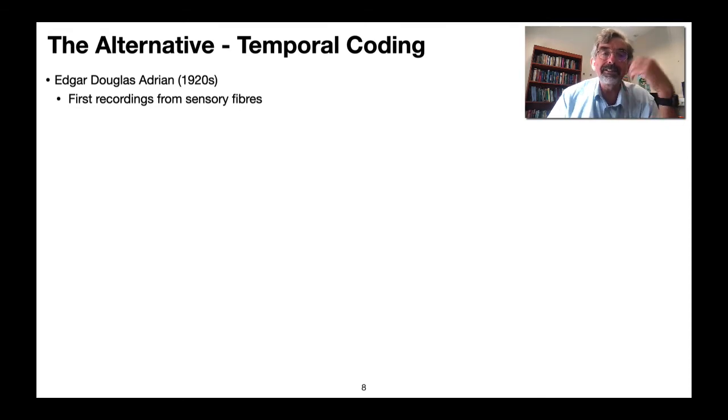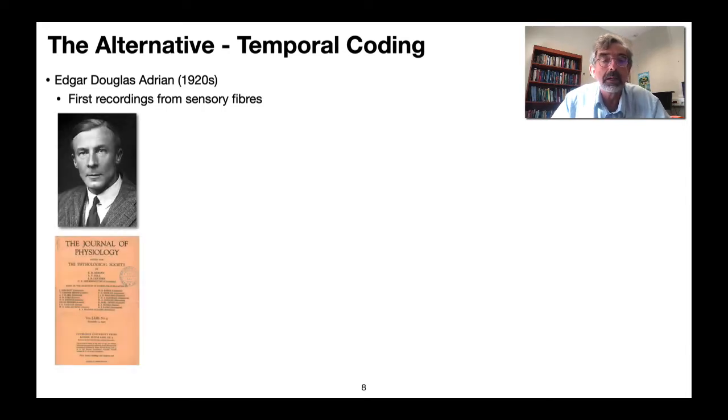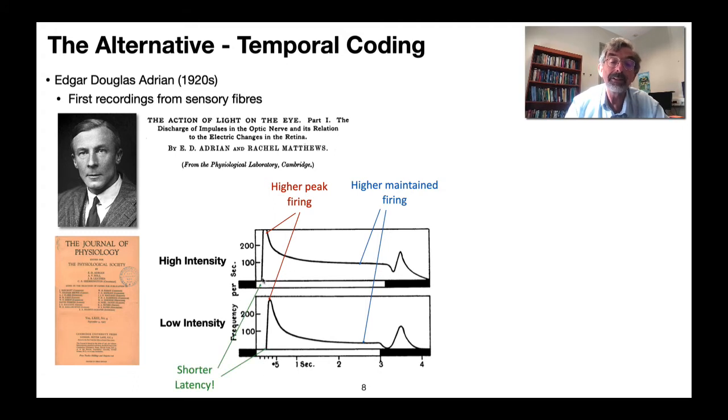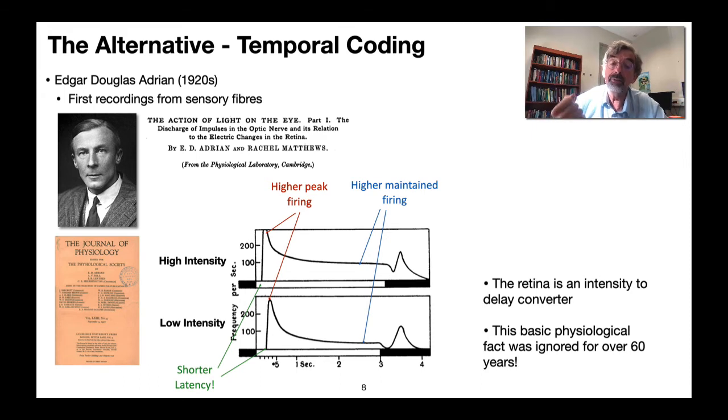And in fact the weird thing is that this has been known since the very birth of neurophysiology. Lord Edgar Adrian in the University of Cambridge in the 1920s, he got the Nobel Prize for this, was recording from sensory fibers. And there's this paper here where he recorded fibers in the eel optic nerve to light, presented spots of light at different intensities, high intensity, low intensity. The stimulus comes on for three seconds and he's measuring the firing rate of a bunch of fibers. With the higher intensity stimulus you get a higher firing rate here than with lower intensity stimulus, and indeed the maintained firing rate is even more different. But the really critical thing is the latency of the onset is completely different. It's much shorter when you have a high intensity stimulus compared to a low intensity stimulus. In other words the retina here is an intensity-delay converter and that basic physiological fact was essentially ignored for over 60 years.